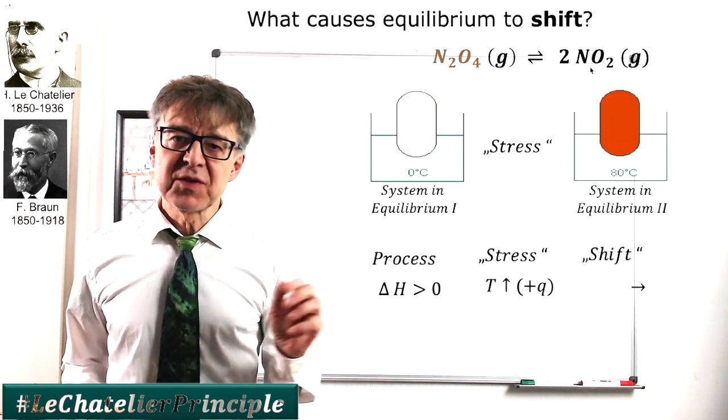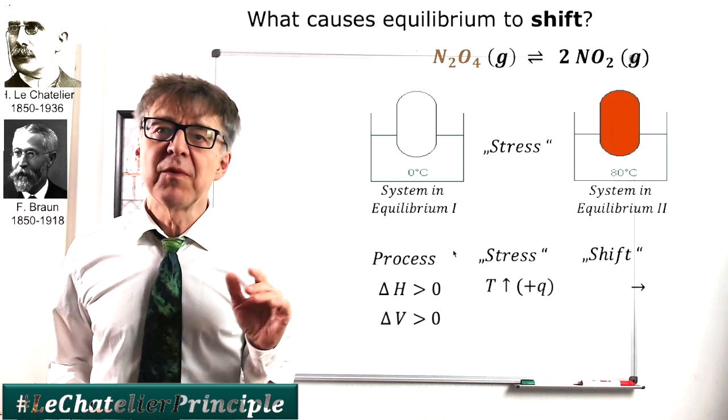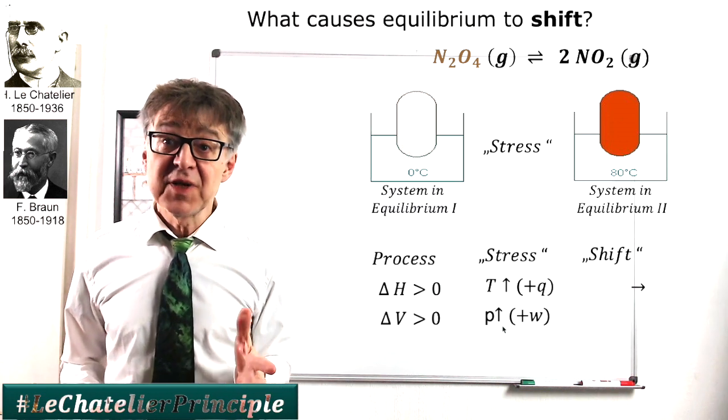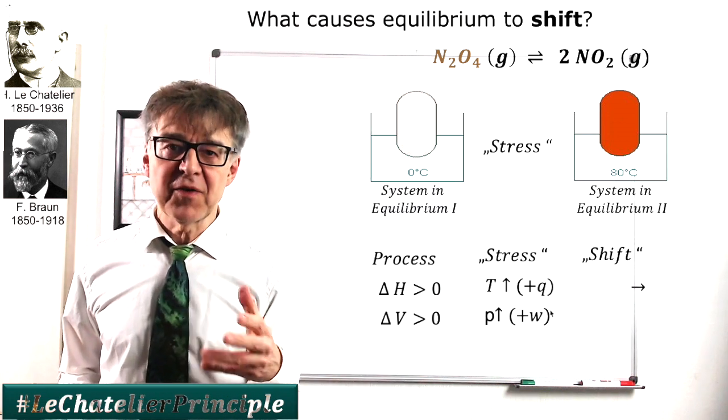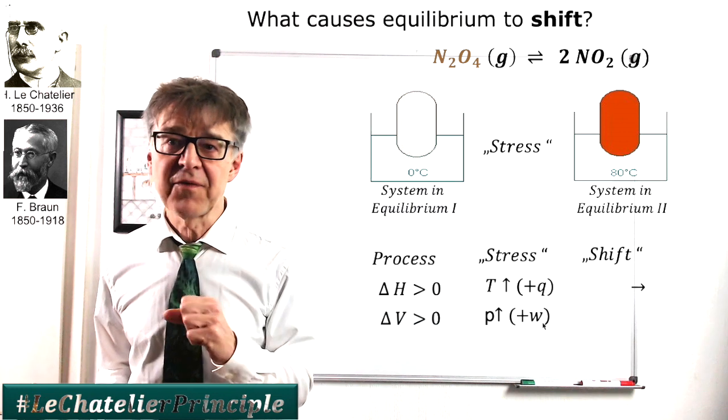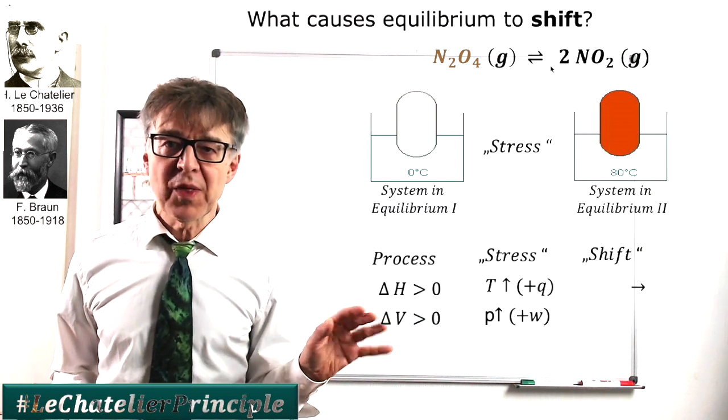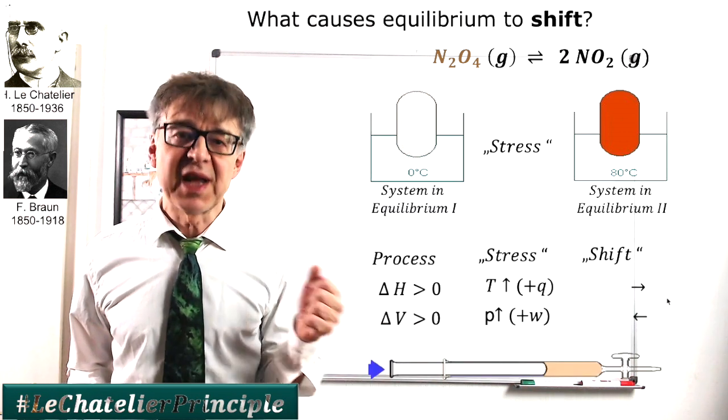With the process N2O4 to NO2, the volume increases. It is an endochoric process. Increasing pressure and thus offering pressure volume work is another form of stress. The equilibrium will shift in the direction where the volume is smaller, that is, it shifts to the left.